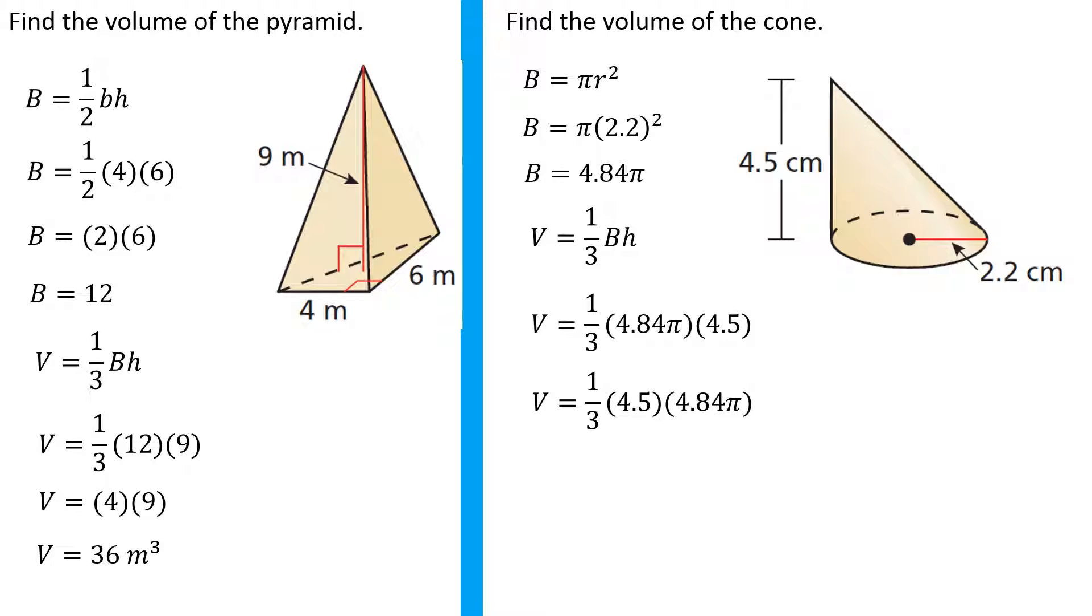Now again, multiplication is commutative, and I figured hey, I can do one-third of 4.5 really easy - that'll be 1.5. But now I'm still going to resort to using a calculator. 1.5 times 4.84. So I've got 7.26 pi cubic centimeters, which is an exact answer. And sometimes we'll want an exact answer.